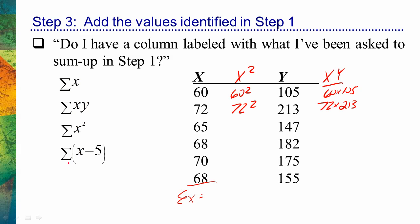In this particular example, I'm being asked to sum up the quantity x minus 5. So I'm being asked to take 5 points from every single x value. Step two: I'll label a new column 'x minus 5' and subtract 5 from every single value. 60 minus 5 is 55, 72 minus 5 is 67, and so forth. Now in step three I ask: do I have a column labeled with what I've been asked to sum up? I've been asked to sum up x minus 5 — here's a column of x minus 5. Now I know exactly what to sum up.